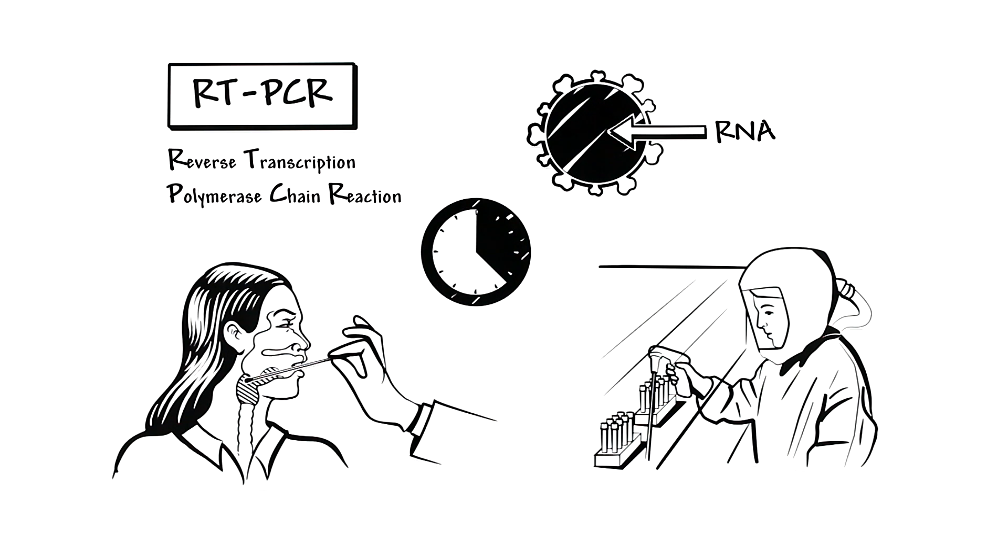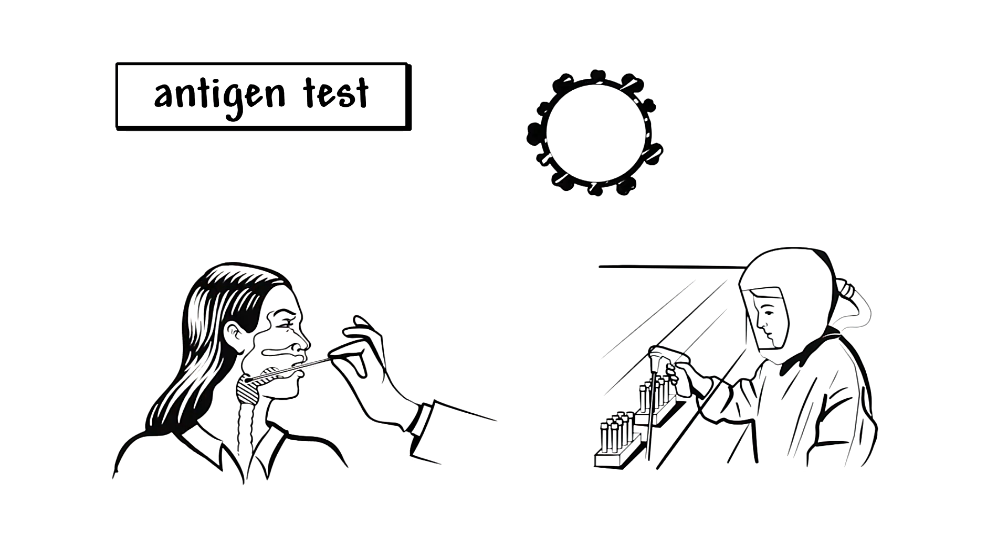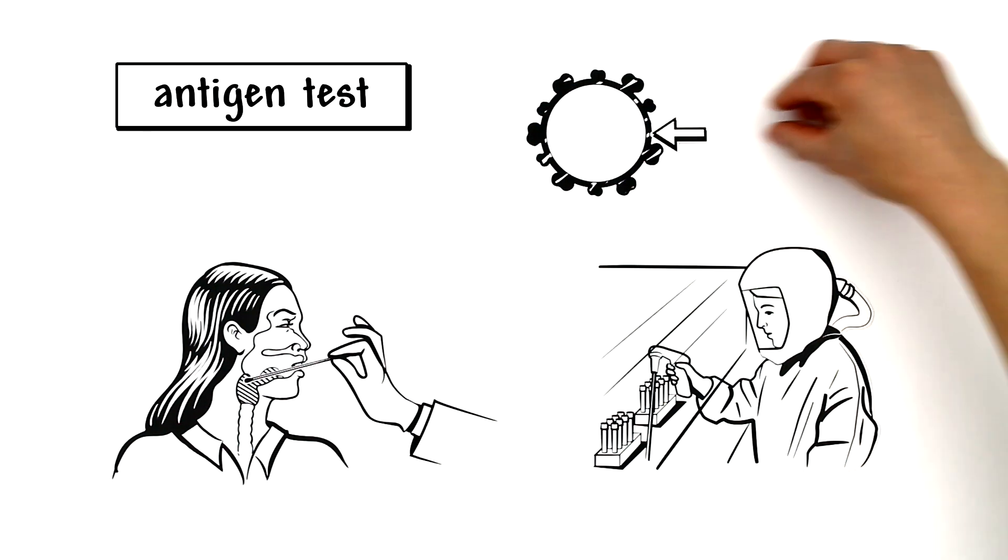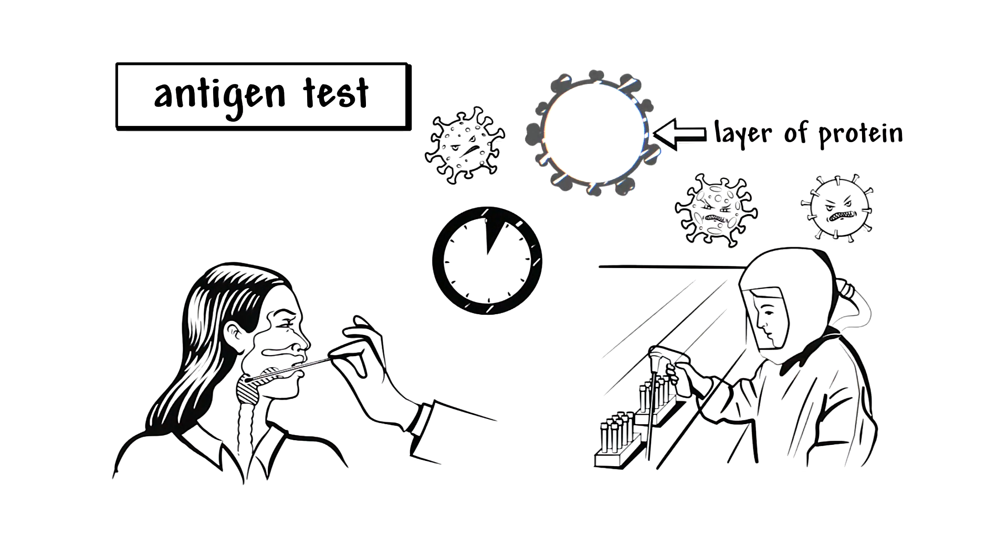A similar, yet cheaper method is the antigen test. Here, the samples are just analyzed for a layer of protein found on the viral envelope. This test provides results within an hour, but it tends to be less precise and may also detect other coronaviruses in addition to the SARS virus.